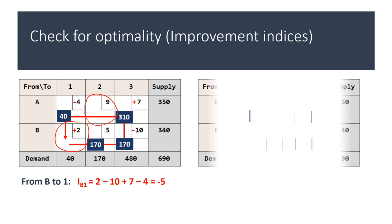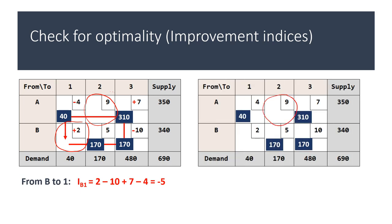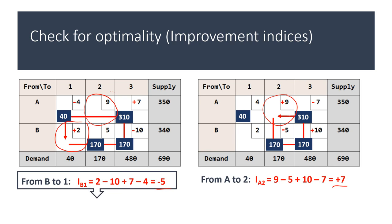For the second empty cell, you trace the closed path going down, left, right, up, and left. The improvement index for that cell is plus 7. Comparing these two improvement indices, we conclude that the cost saving route is the one from B21. So we want to revise the allocation by allocating more units on the route B21.